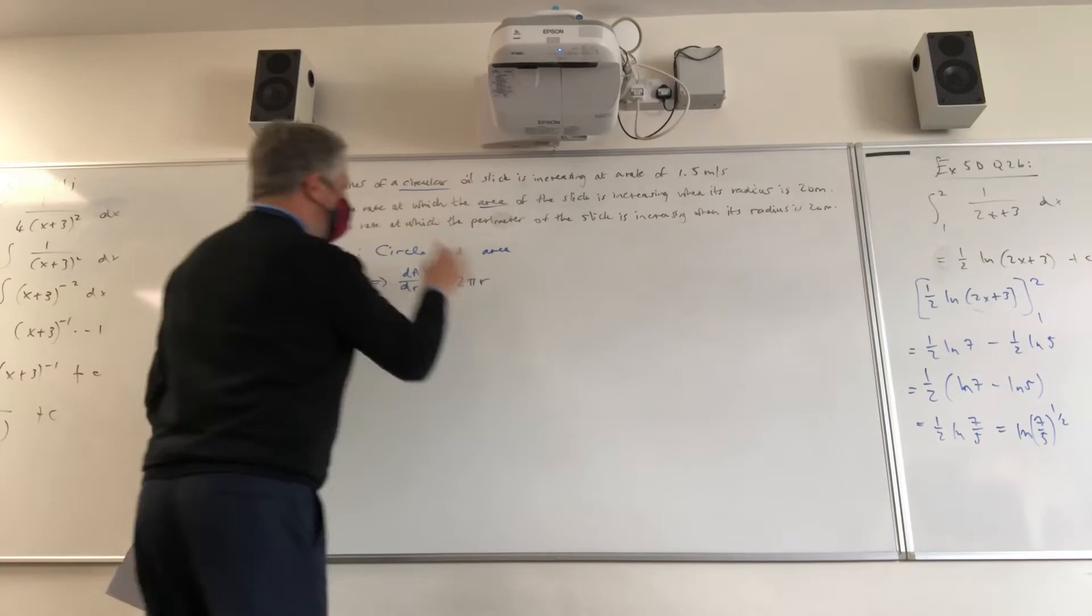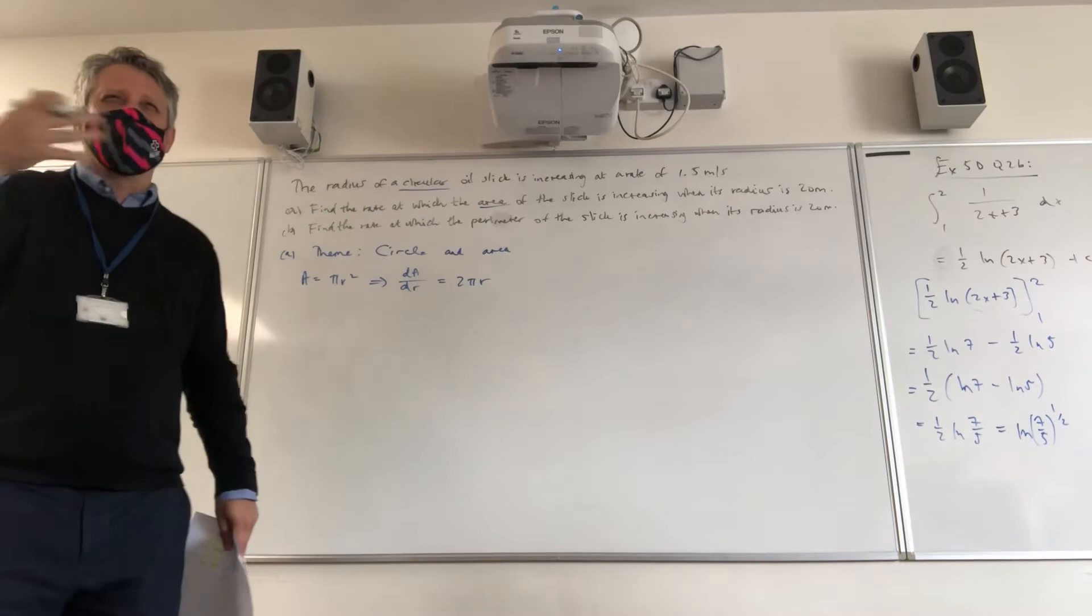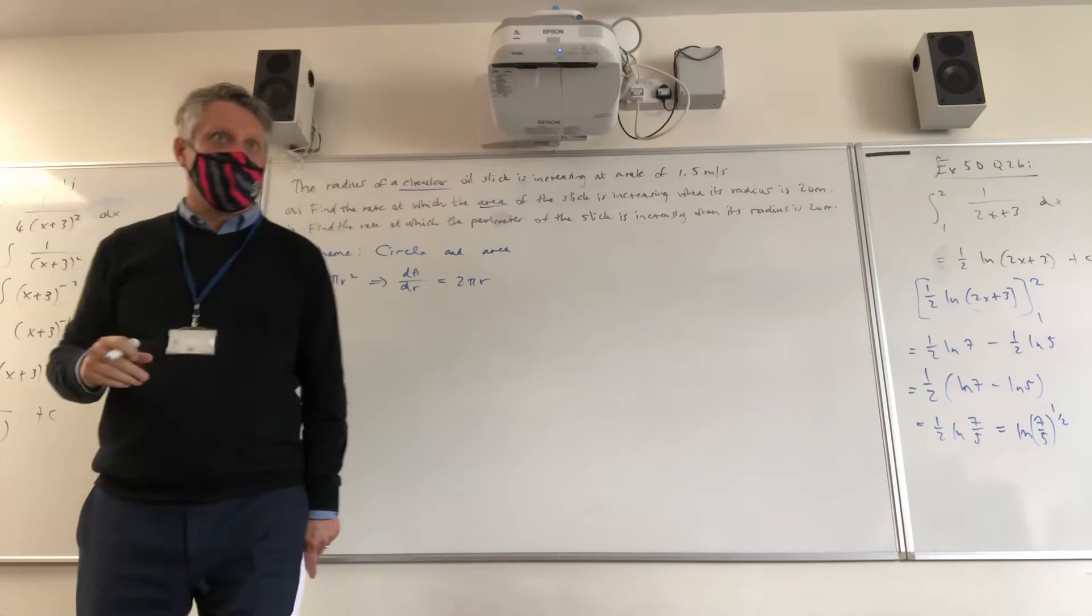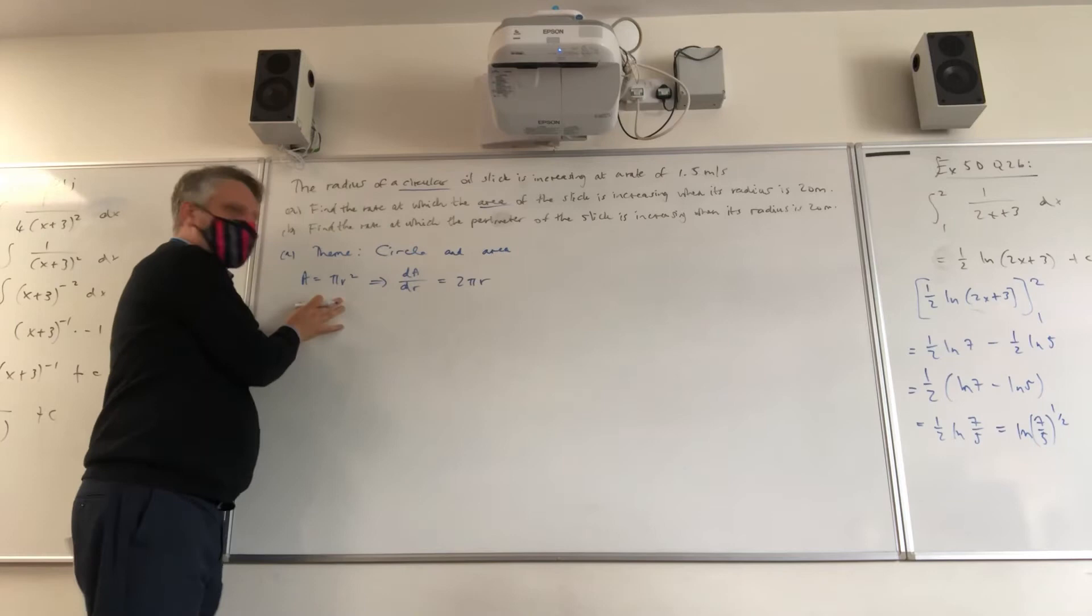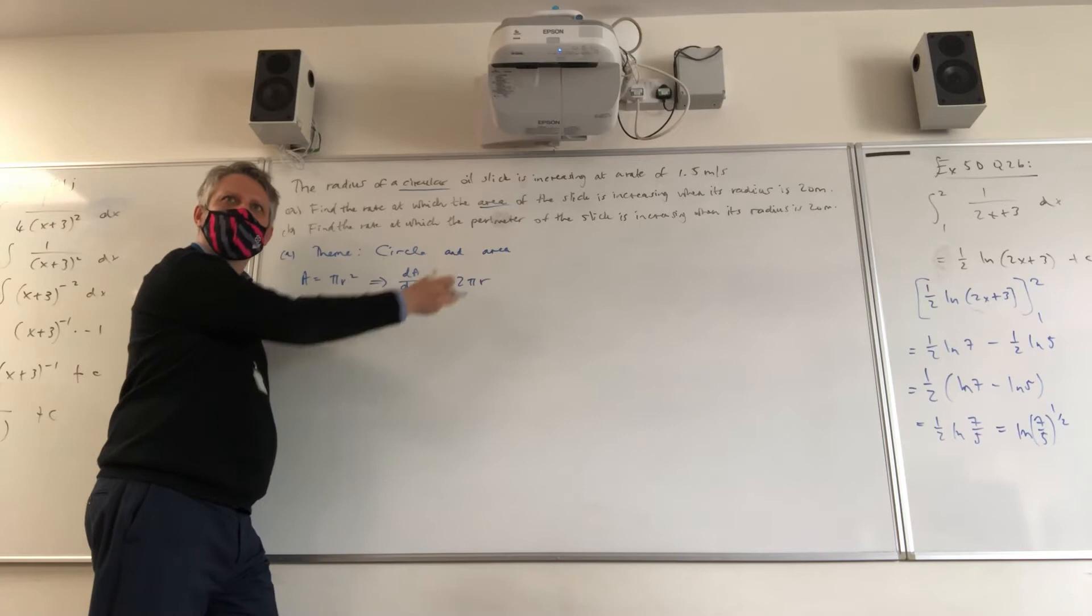Because I know that the type of question this is, when rates have changed, that the chain rule is going to play a role. I always try and see what the derivative of something would look like. Okay, so if I'm dealing with a circle and an area, well that seems like a logical place to start, then let's also consider what that derivative would look like. So that could prove useful later on.